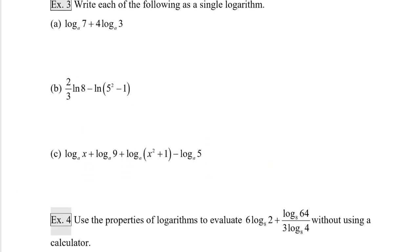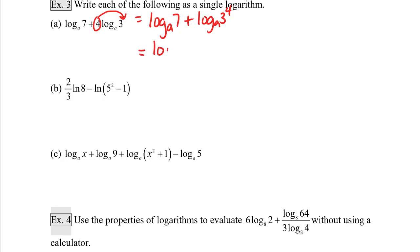Now we're going to go the opposite direction. Example three: write each of the following as a single logarithm. The first thing we do is put the factor back in as a power. So this is the same as log base a of seven plus log base a of three to the fourth. Now that I have two logs with the same base being added together, I can write them as a product: log base a of seven times three to the fourth, which simplifies to log base a of 567.